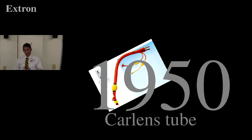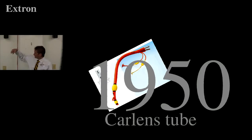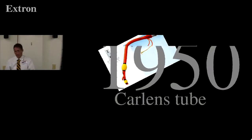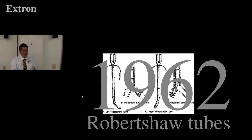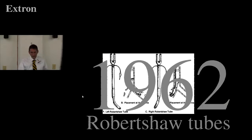In 1950, Carlens came out with what we sort of have today — one endobronchial lumen, one tracheal lumen, all incorporated in one cuff. The Carlens tube had a carinal hook meant to hook the carina to tell you that you're in the right place. The first right-sided tube came in 1960, and in 1962 Robert Shaw came up with the tubes we use today — really the modern iteration of the endobronchial tube.